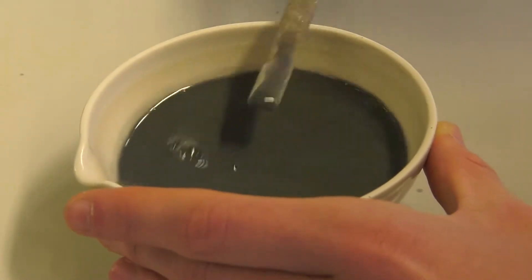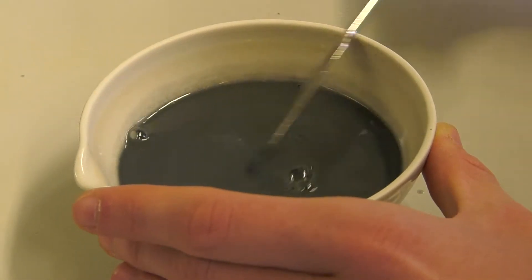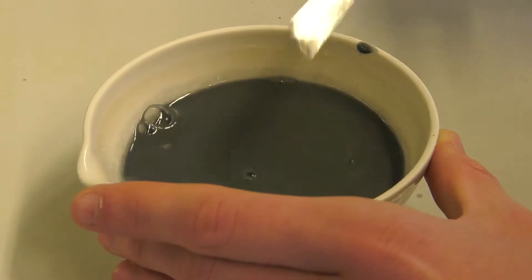Next, pour the sodium hydroxide solution and the 25g of zinc powder into the porcelain bowl.